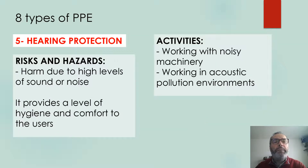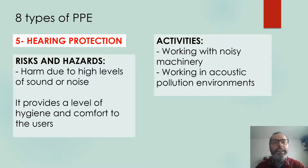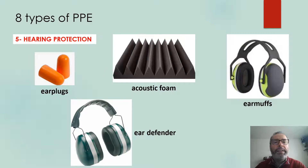The fifth type of PPE is hearing protection. It helps to prevent risks due to high levels of sound or noise, and it also helps to give a good level of hygiene and comfort to the user and the worker. Typical activities are working with noisy machinery or working in acoustic pollution environments, which is quite common nowadays. Examples include earplugs, ear defenders, acoustic foams, or ear muffs.